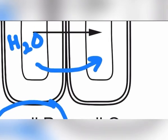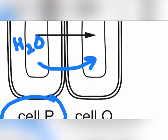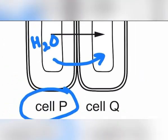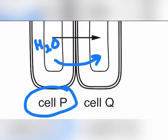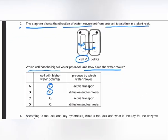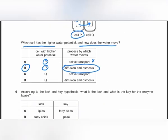Water is crossing both cell membranes and cell walls, so movement occurs by both osmosis and diffusion. Water never flows by active transport. The answer is B.